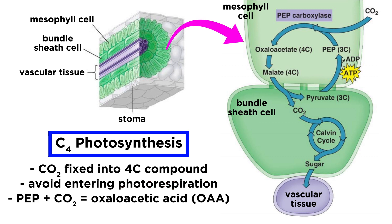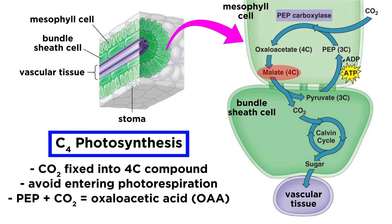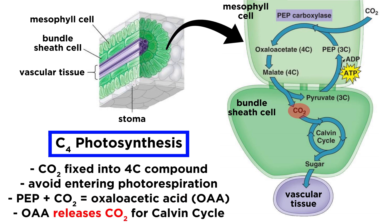They do this by initially fixing carbon dioxide in the mesophyll cells via the enzyme PEP carboxylase, which reacts the three-carbon phosphoenolpyruvate, or PEP, with CO2 to form the four-carbon oxaloacetic acid, or OAA. The resulting four-carbon compound within the mesophyll then cycles into the bundle sheath cells and releases CO2, meaning the levels of carbon there will always remain high enough for the Calvin cycle to make sugars.